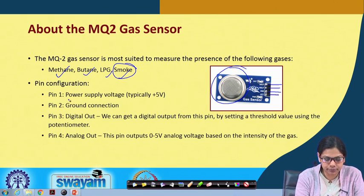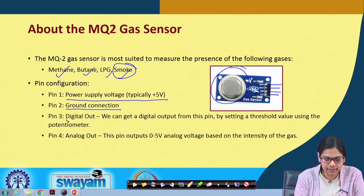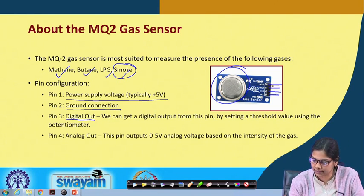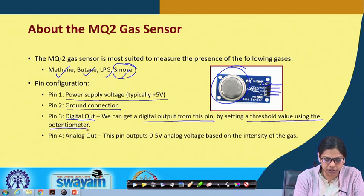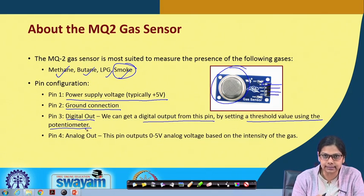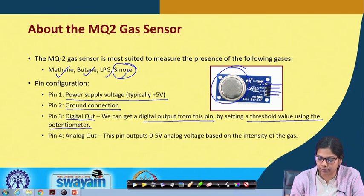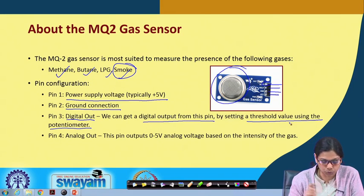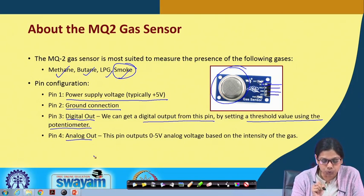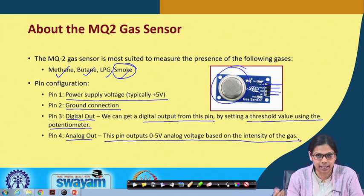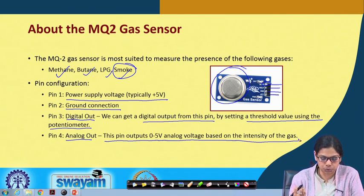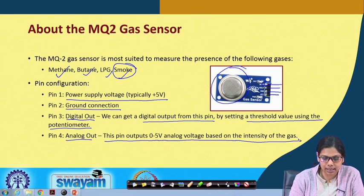The pin configuration goes like this. The first pin is the power supply voltage, which is typically 5 volts — that is VCC — then the ground connection. Then there is a digital out pin. From the digital out pin we can get a digital value by setting the threshold value using the potentiometer, similar to what we have seen with the LCD display. If you want to use the digital out value, you have to use the potentiometer to adjust the threshold value. Then there is the analog output pin, which outputs 0 to 5 volts analog based on the intensity of the gas, which we are mostly concerned with.